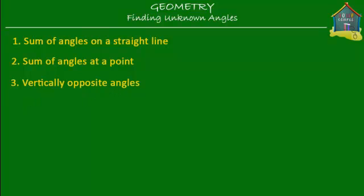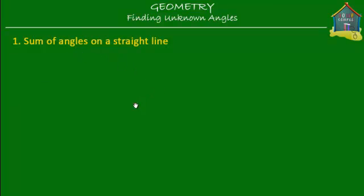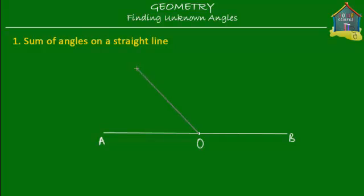Let's start with the first one. Let's find out what the sum of angles on a straight line is. Say I have a straight line, and I'll label this as AB. I mark a point O on this line, and from O I shoot out a line that I call OC. What I want to find out is the sum of angles on the straight line AB, or AOB.